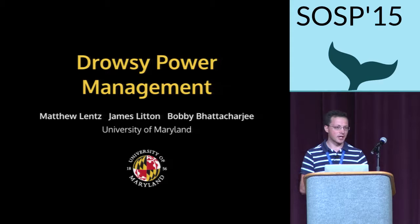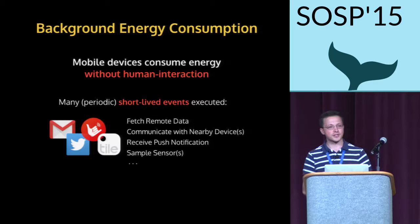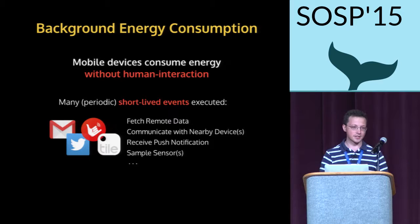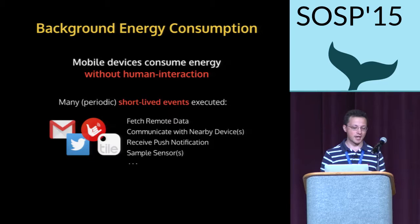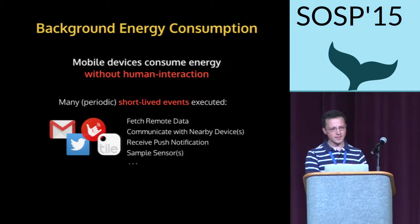Today I'll be telling you about Drowsy, which is both a system and a new power management state which reduces energy consumption by targeting short-lived events. These events occur in the background and consume energy when we're not even interacting with our devices. These short-lived events are typically application-generated. They last on the order of hundreds of milliseconds to a few seconds, and they are rather limited in scope. For example, you may just sample a sensor and perform some minor processing on this.